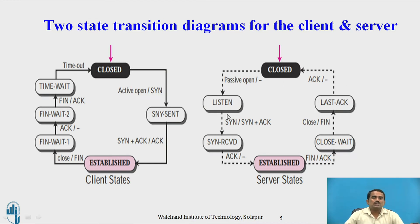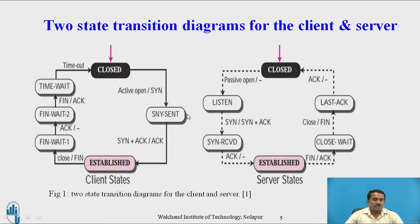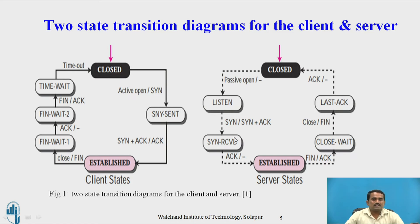These are the two different states for client and server. In the previous video, the overall diagram was discussed briefly. Now, here the client states and server states are given clearly and separately. In the main diagram, the dark line indicates the client and the dotted line indicates the server, but here both are shown clearly.